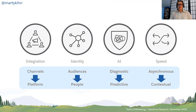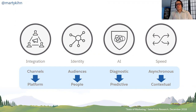These four forces are: number one, integration — different channels and departments need to integrate and have more of a platform approach, one platform from which every department gathers data and applies analytics. Number two, identity — getting more, with consent, down to the level of targeting and measuring individuals rather than just groups or segments. Number three, AI — looking more at the future, predicting what's going to happen. And number four, speed — rather than pre-planning every single campaign, trying to react more in the moment, getting more contextual with your marketing.